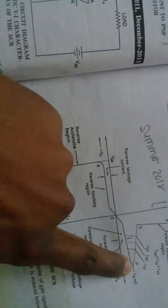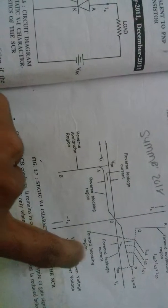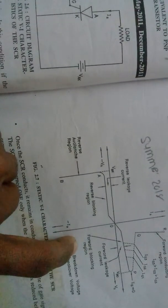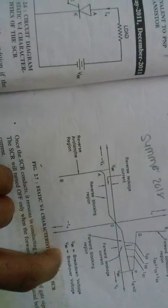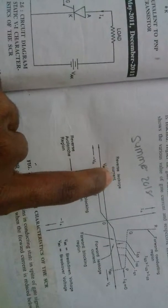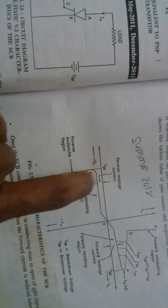The gate current curves IG1, IG2, and IG3 show that increasing gate current shifts the forward blocking region. VB represents the breakover voltage. The reverse leakage current appears in the negative sequence of the SCR V-I characteristic.